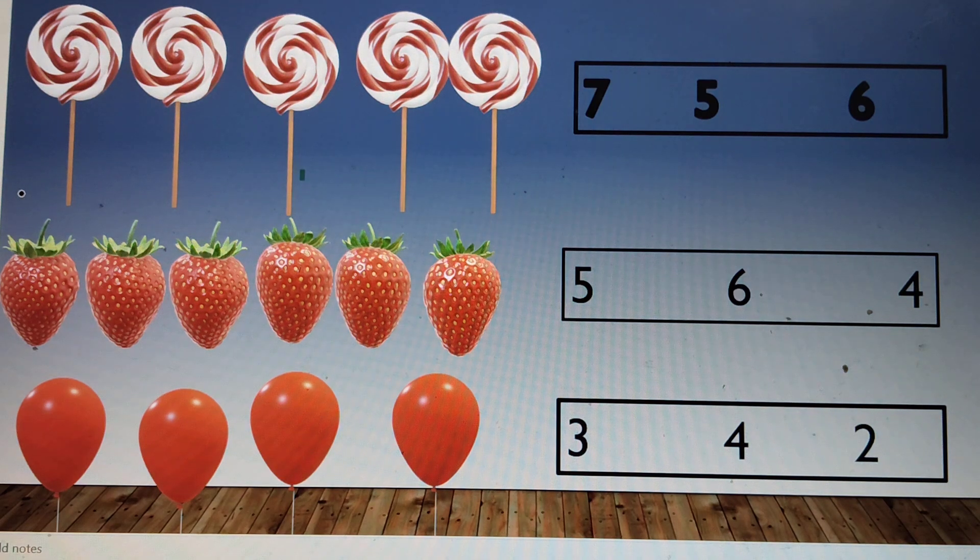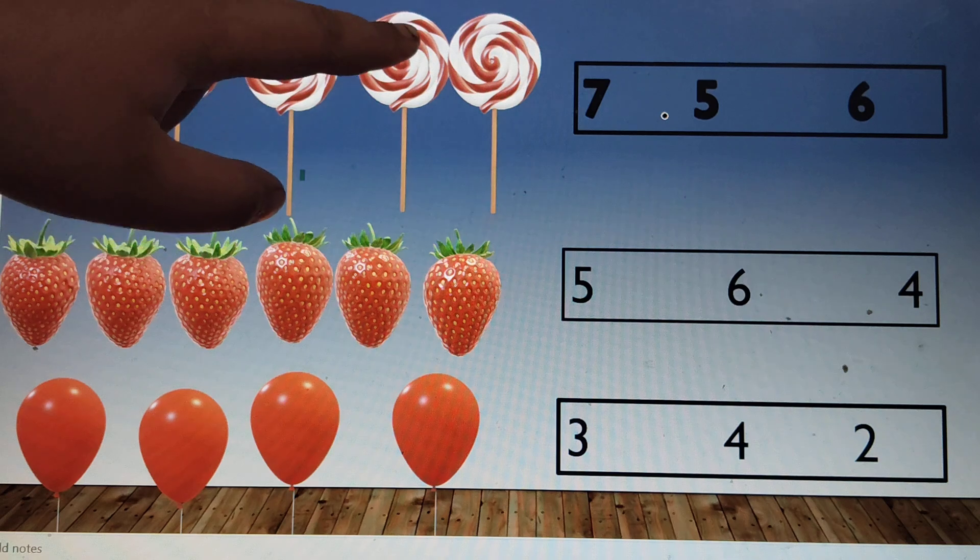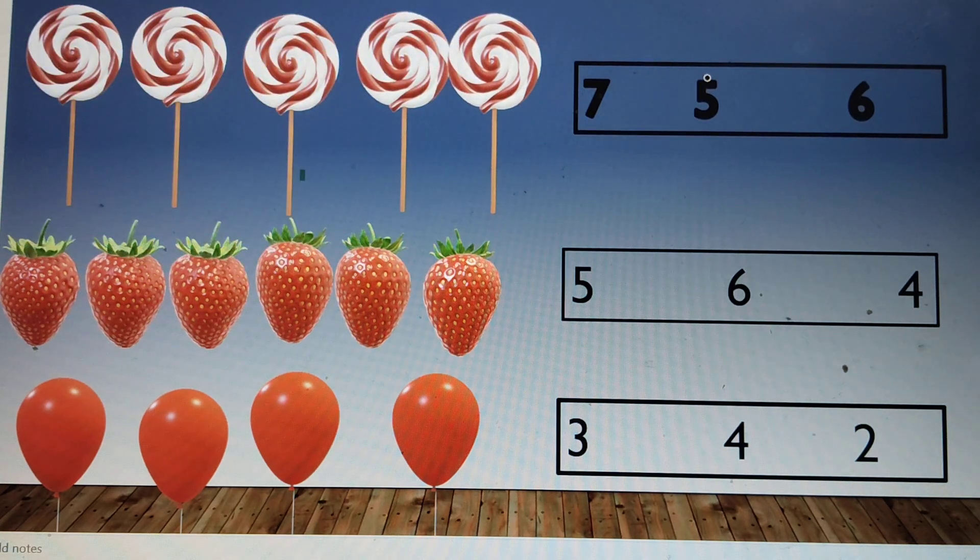How many lollipops do you see here? One, two, three, four, five. Five. Circle the number five.